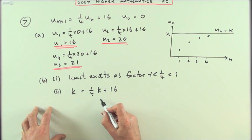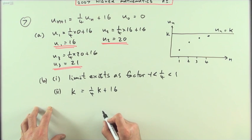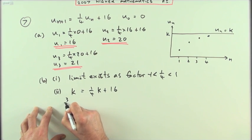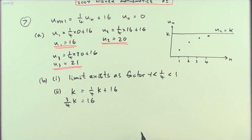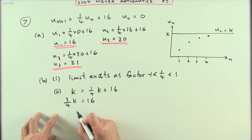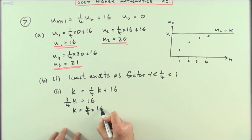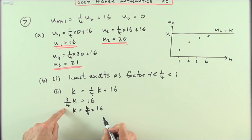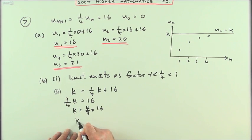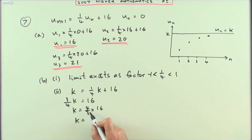Solve that algebraically by saying if I take that over, I'll have 3 quarters of K equals 16. Not taking away the fraction this time, just doing a subtraction. So K is going to be 4 upon 3 times 16. The 3 is multiplying, so it divides. The 4 is dividing, so it multiplies. Which means K is going to be 64 upon 3.